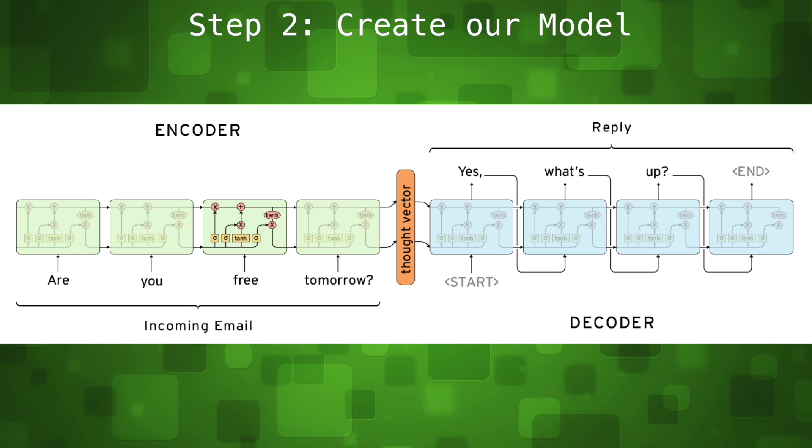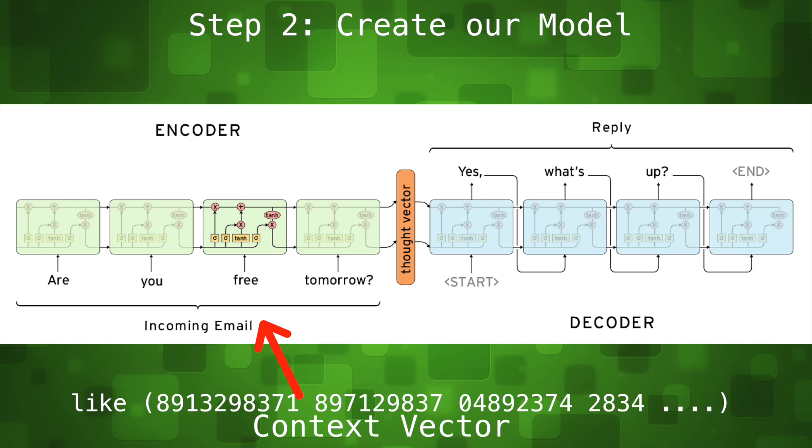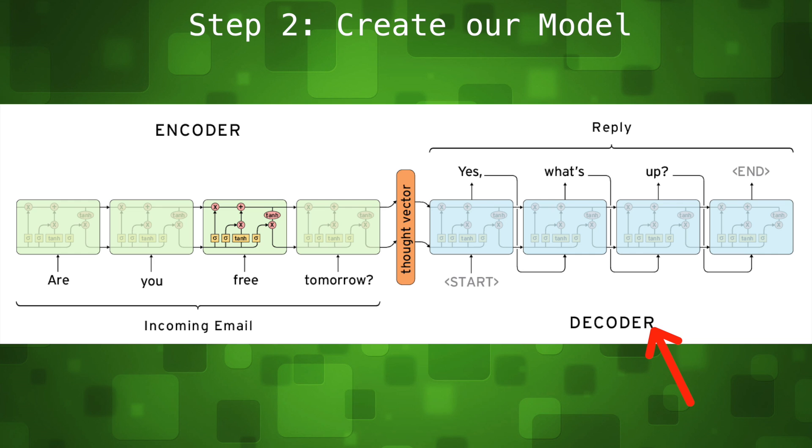A sequence to sequence model consists of two recurrent neural networks. One recurrent net is the encoder. Its job is to create an internal representation of the sentence it's given which we can call a context vector. This is a statistical value that represents that sentence. The other recurrent net is the decoder. Its job is to given a context vector output the associated words.